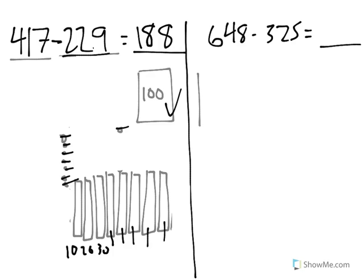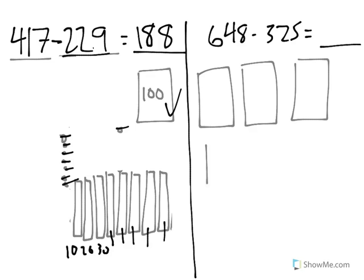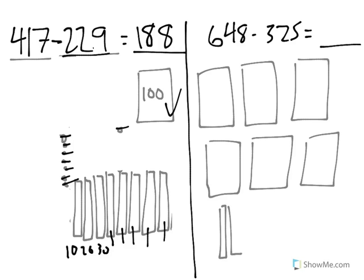Let's take a look at this other one over here. 648 minus 325. I'm going to represent the 648 the same way that I represented the 417 in the last one with hundreds, tens rods, and ones.